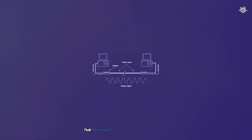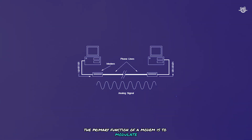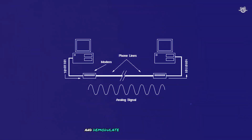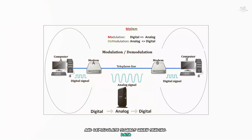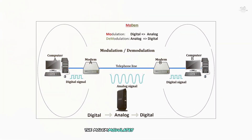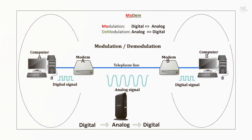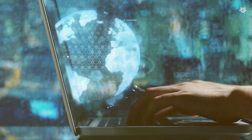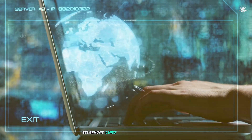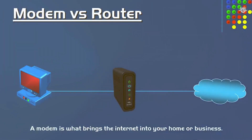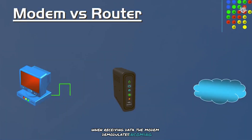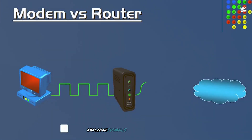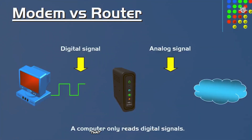The primary function of a modem is to modulate and demodulate signals when sending data. The modem modulates digital signals from your devices into analog signals that can be transmitted over cable, telephone lines, or other infrastructure. When receiving data, the modem demodulates incoming analog signals back into digital signals that your devices can understand.